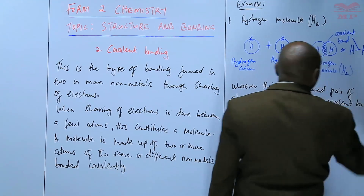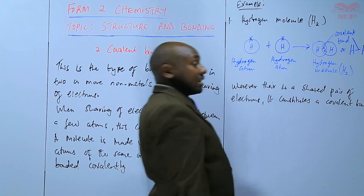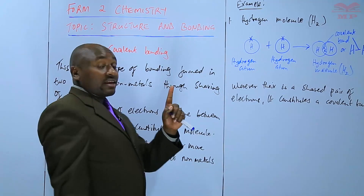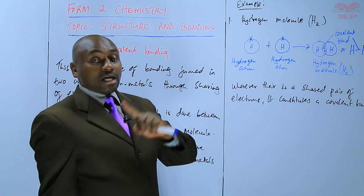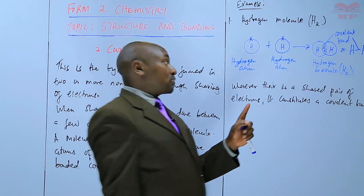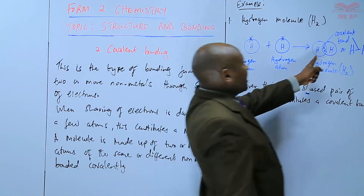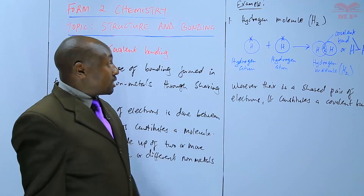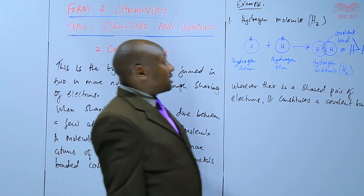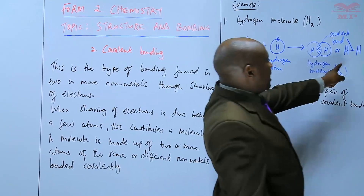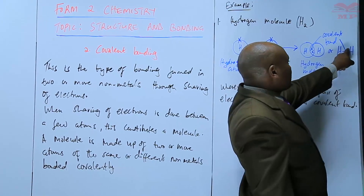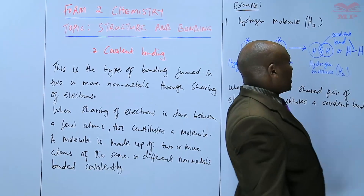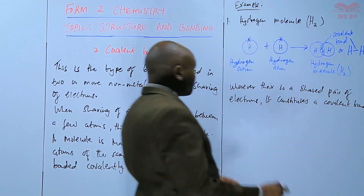If there is only one shared pair, that is one covalent bond. If there are two pairs, those are two covalent bonds. In the hydrogen molecule there is only one pair of electrons, indicating one covalent bond between the two hydrogen atoms.